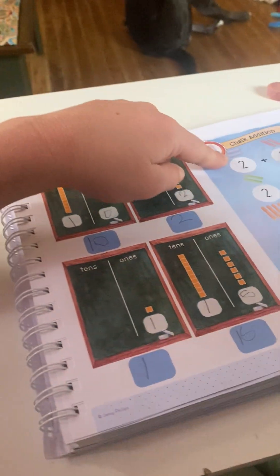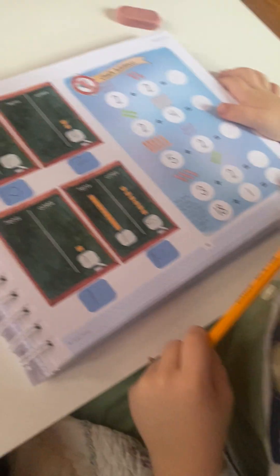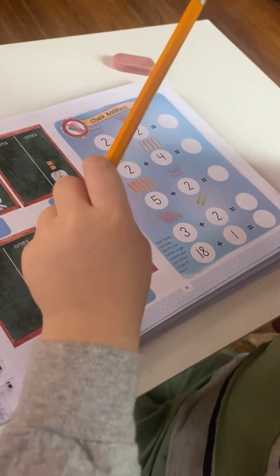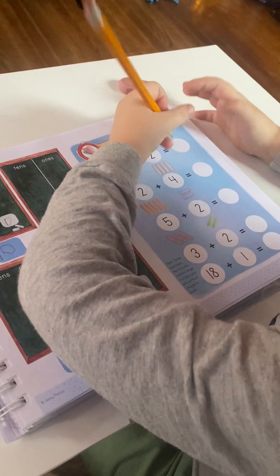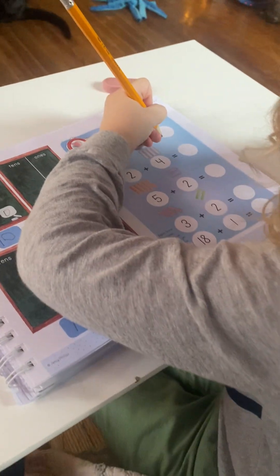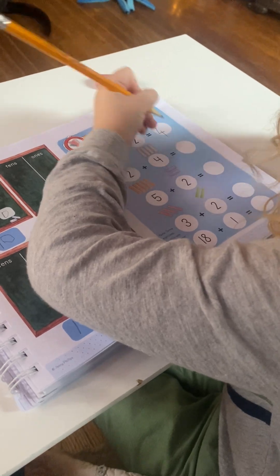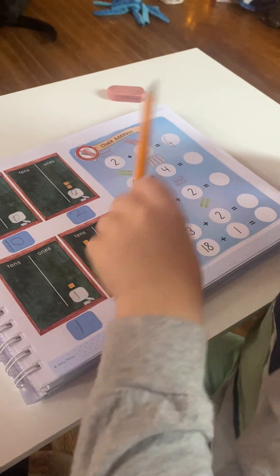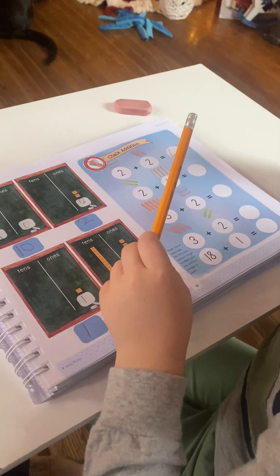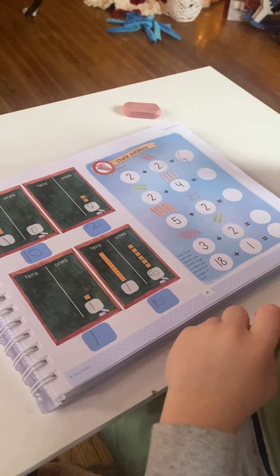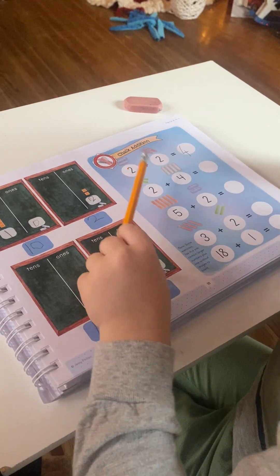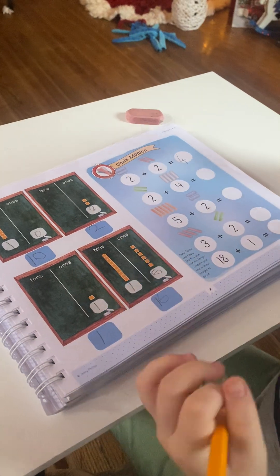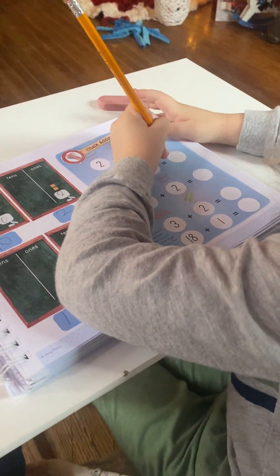All right, what about chalk edition? How many chalks are there? Two plus two equals four chalks. Four chalks, all right. So two chalks plus four chalks is one, two, three, four, five, six chalks.